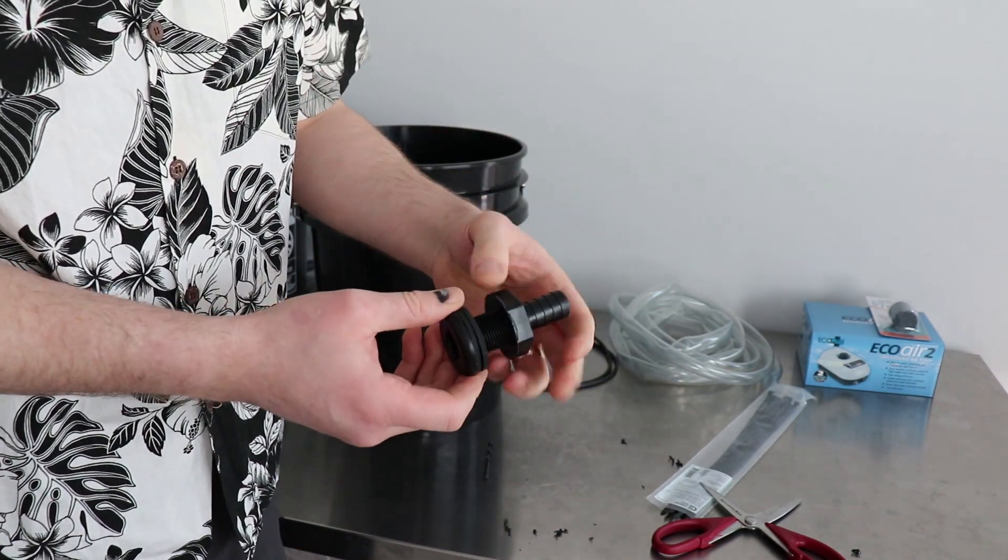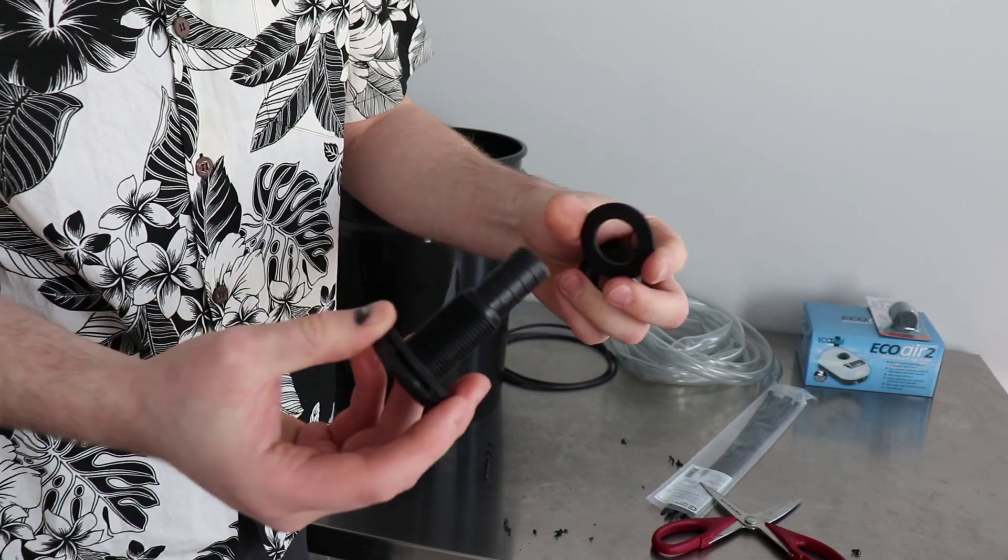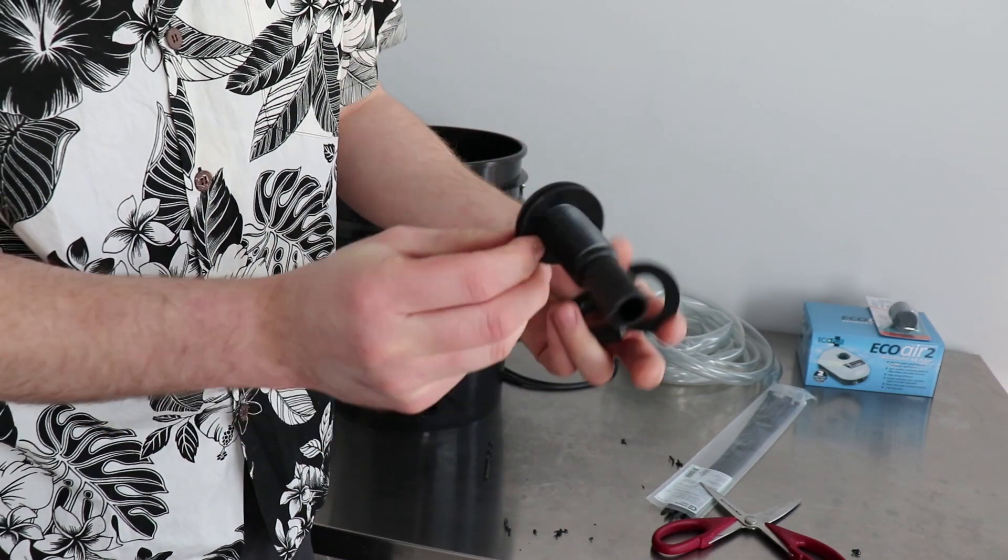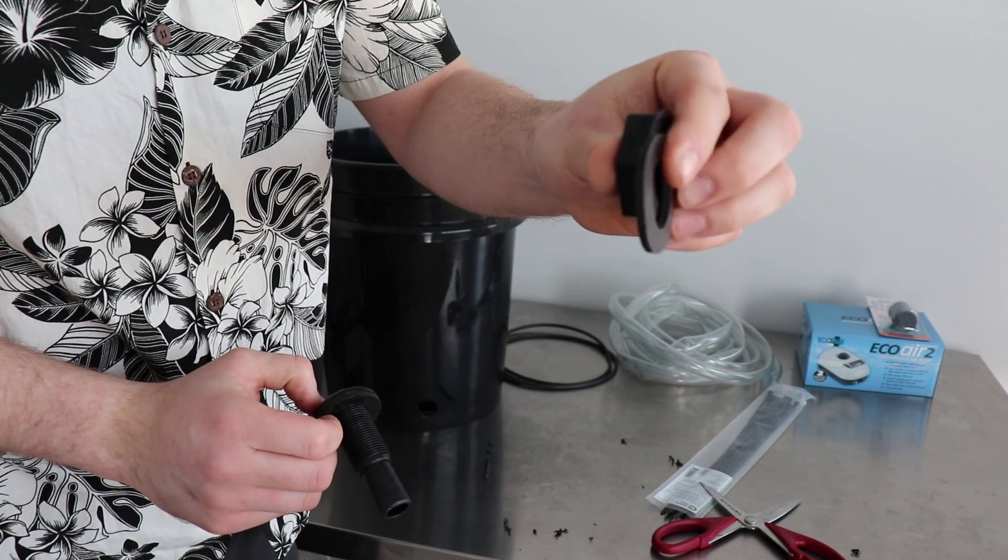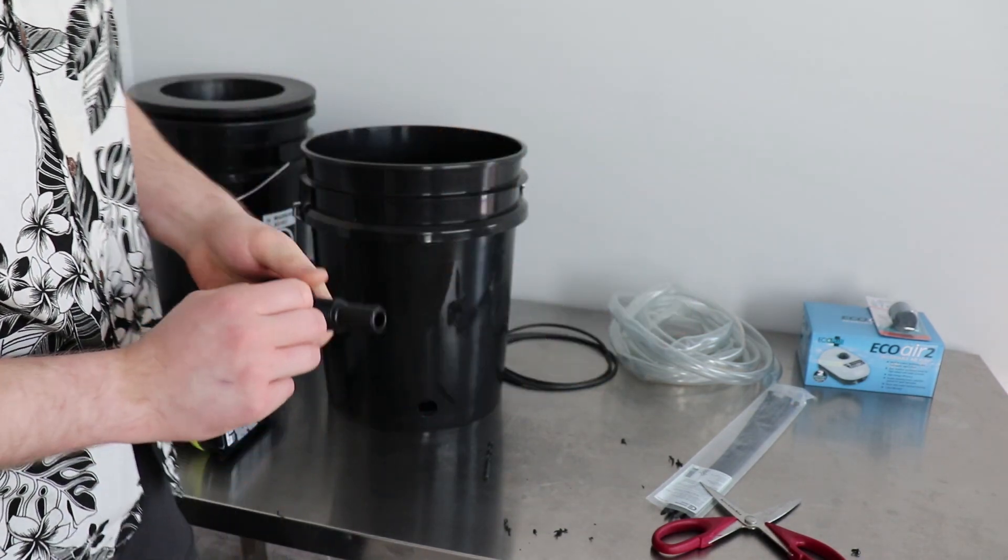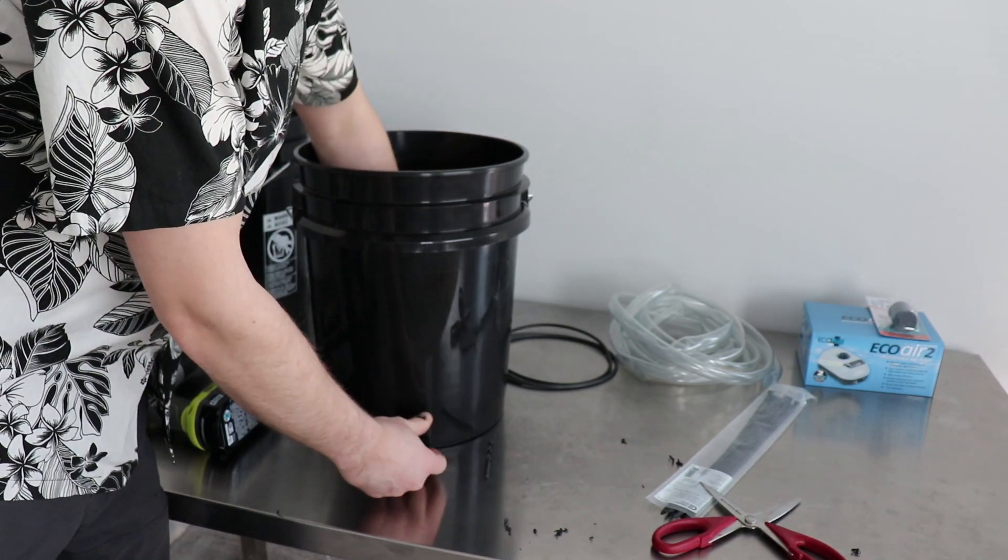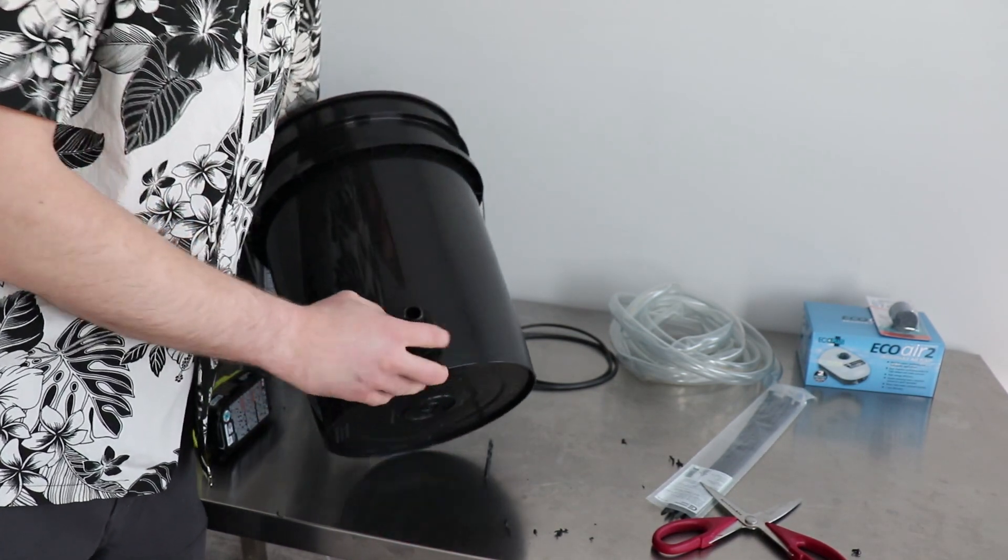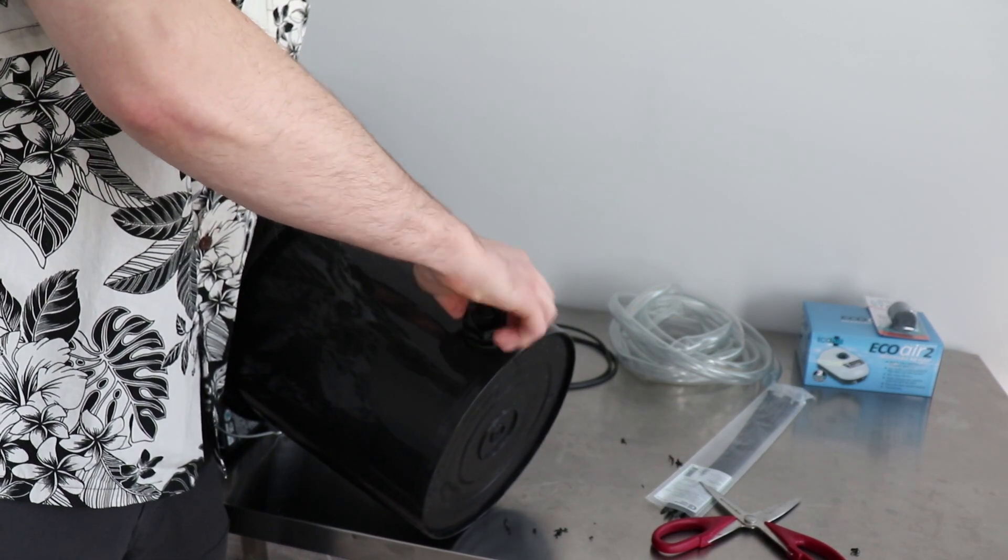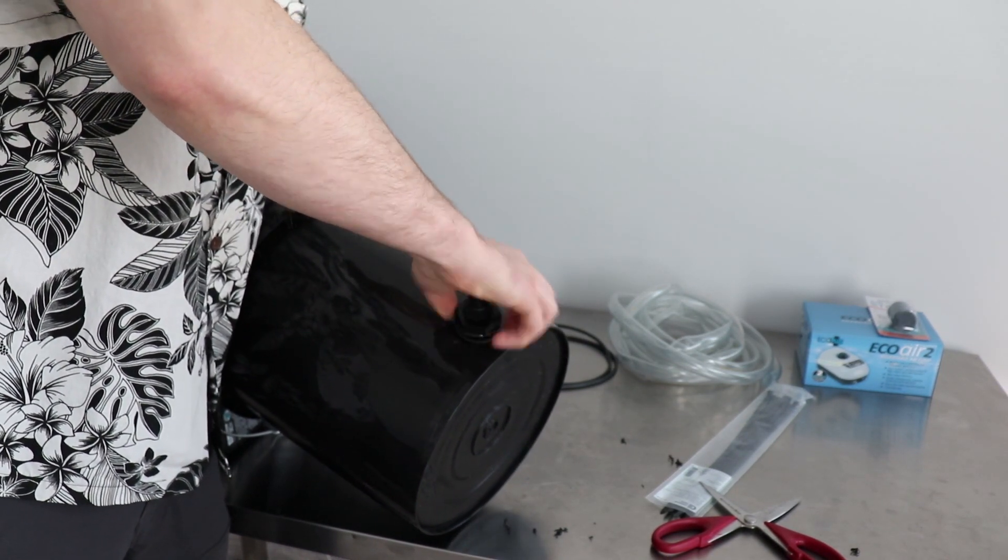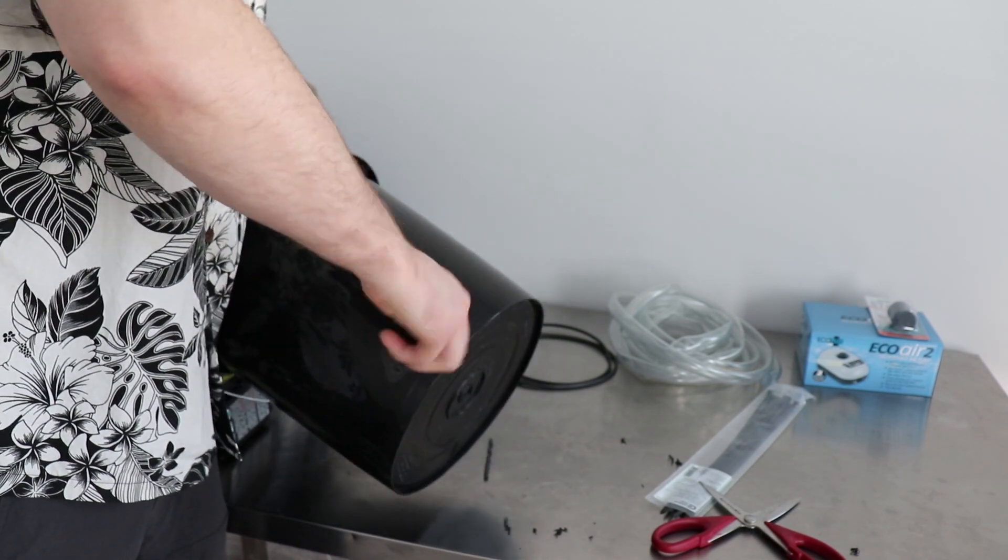Take your fitting, it's going to have two gaskets. This is going to slide in from the inside with the gasket, this is going to go on the outside with the gasket and clamp it. Screw that on nice and tight. You don't need to go overkill with it, but make sure it's snugged.